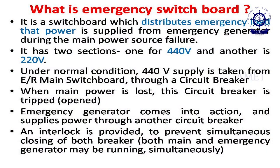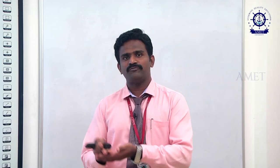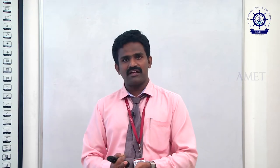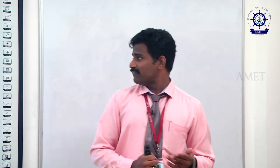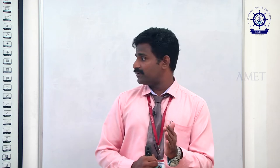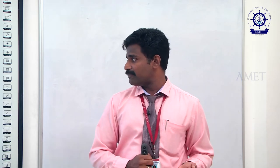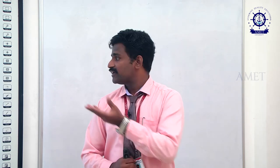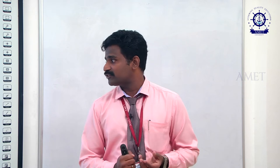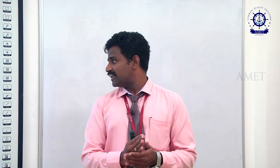They are separated for easy maintenance and backup management. If we only need 220V, we only connect 220V. Connecting both unnecessarily causes fuel loss and power loss. When power is lost, the circuit breaker trips and the emergency generator comes into action, supplying power through another circuit breaker. There is an interlock provided to prevent the simultaneous closing of both breakers.